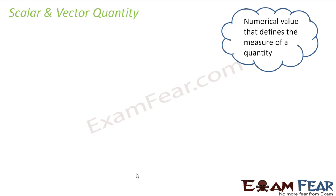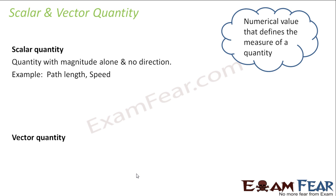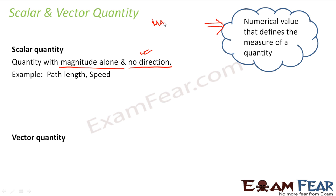So let us see what is a scalar quantity and what is a vector quantity. When I talk of a scalar quantity, it is a quantity with magnitude alone and no direction. Whenever we see a scalar quantity, that means any quantity which you can define completely only with the help of magnitude. Magnitude is nothing but a numerical value that defines the measure of a quantity.